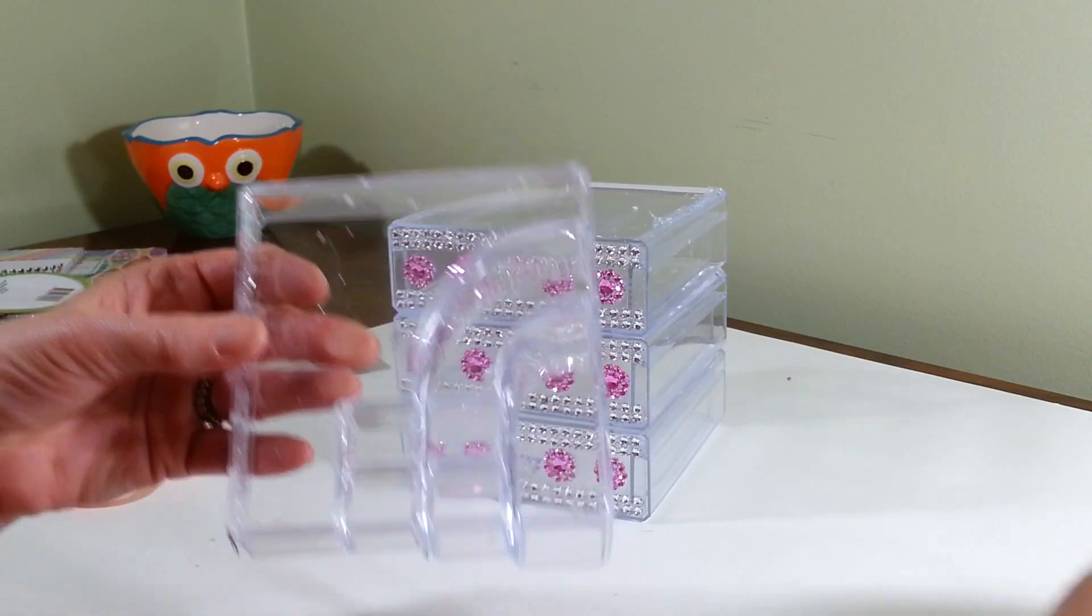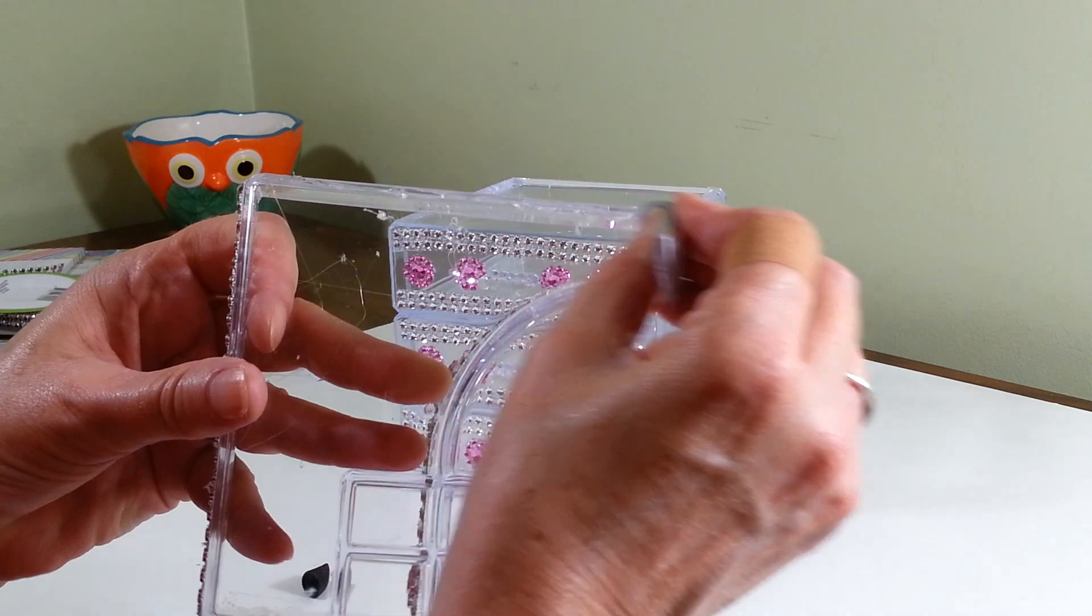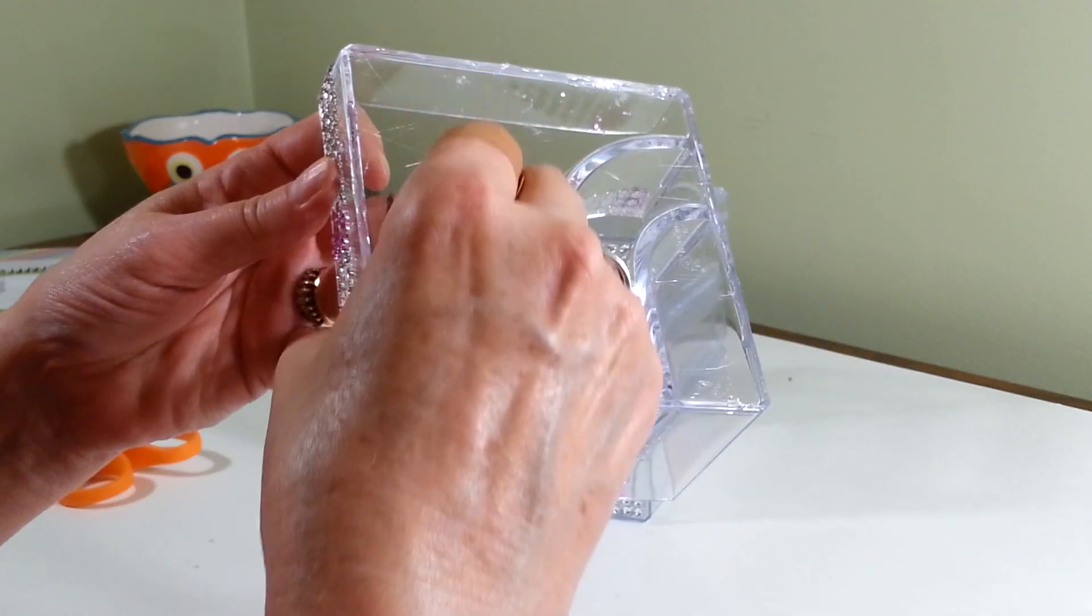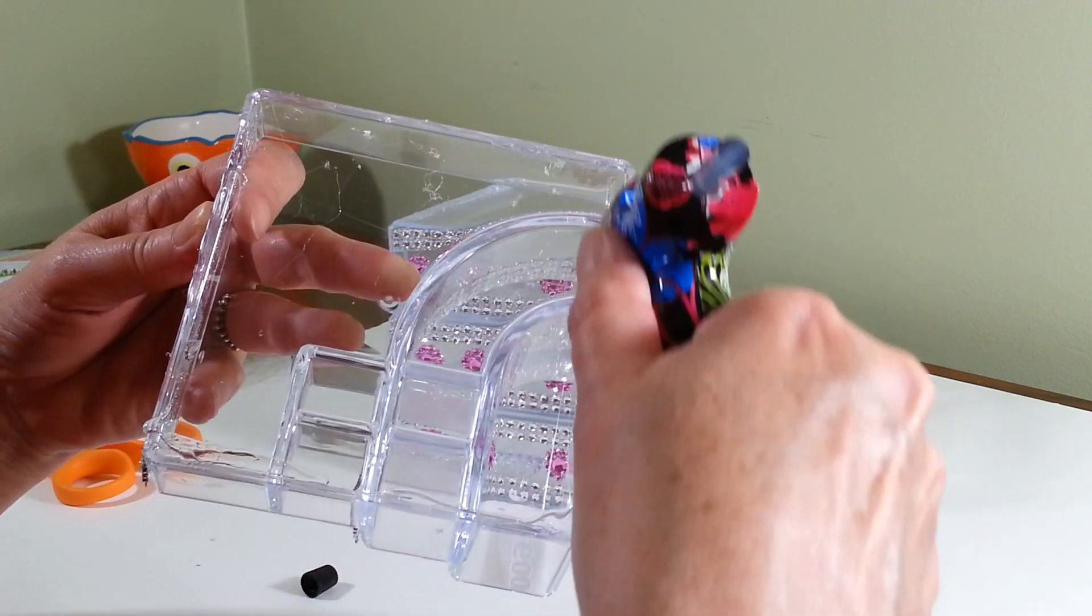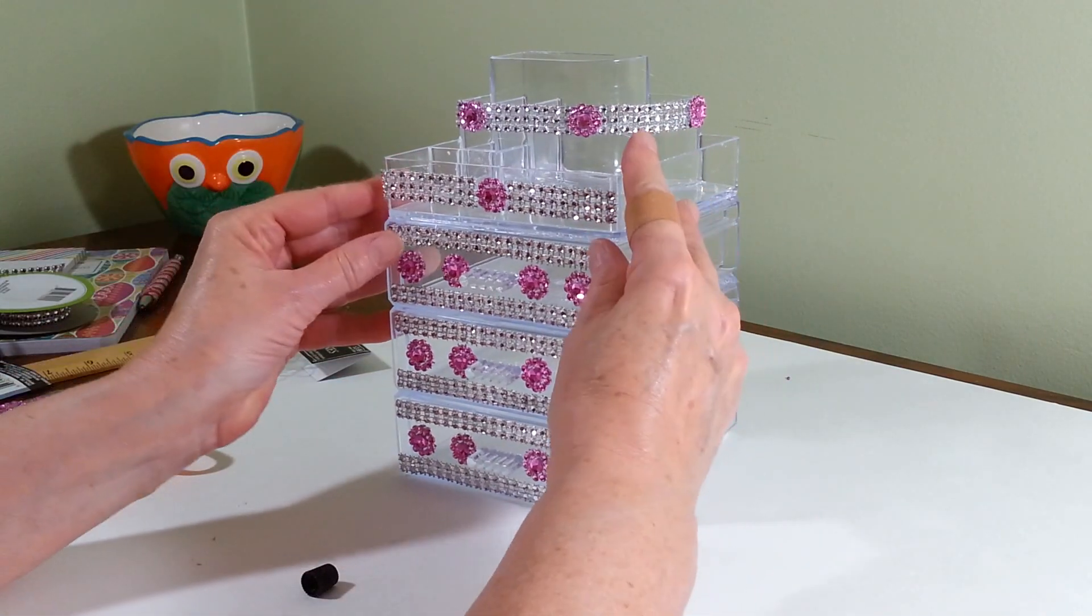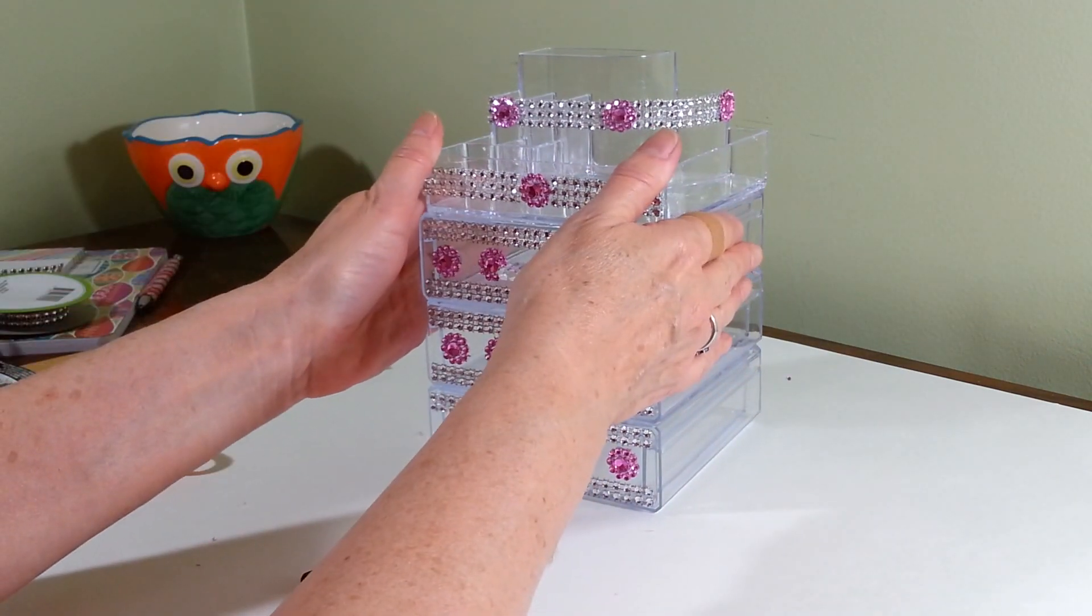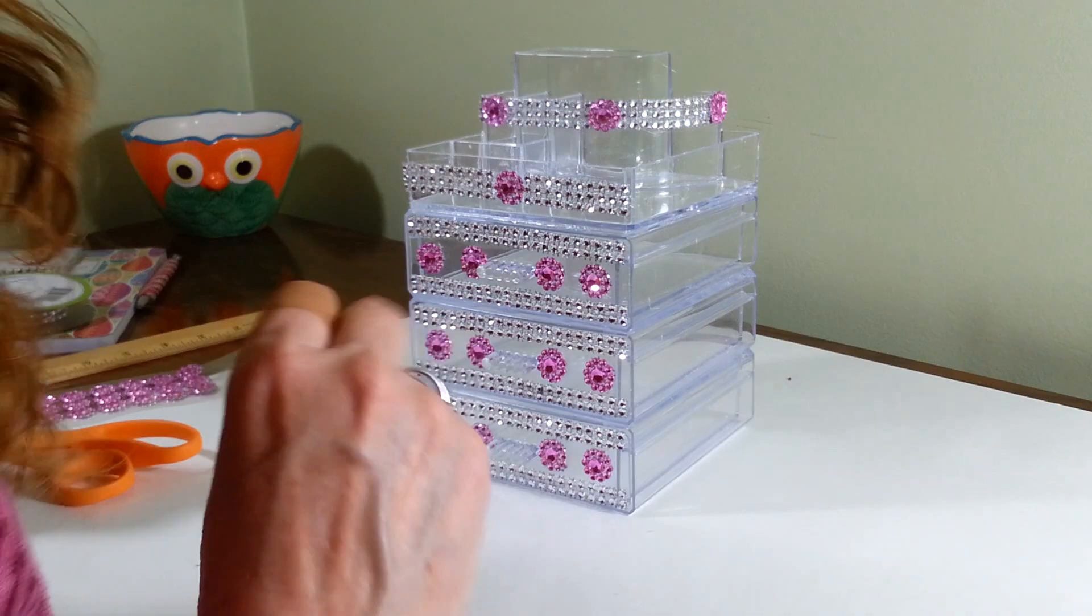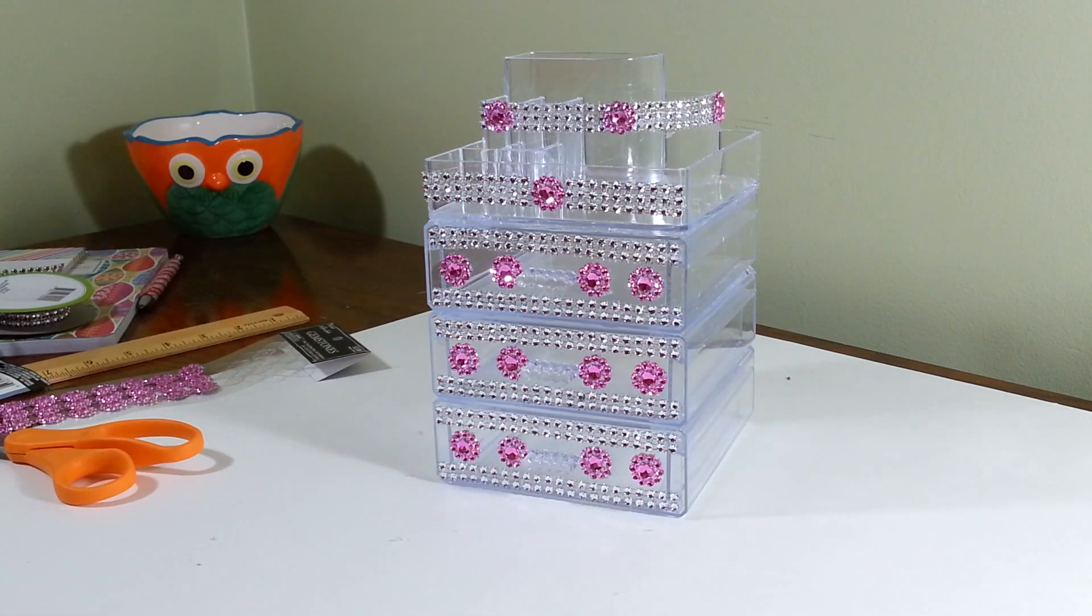So now we're going to add some E6000 to the base of these. Not too much because this stuff holds like crazy, especially on acrylic. I'm just going to put a little hot glue to keep me going here. All right. And make sure it looks nice and even. I think that looks pretty good.